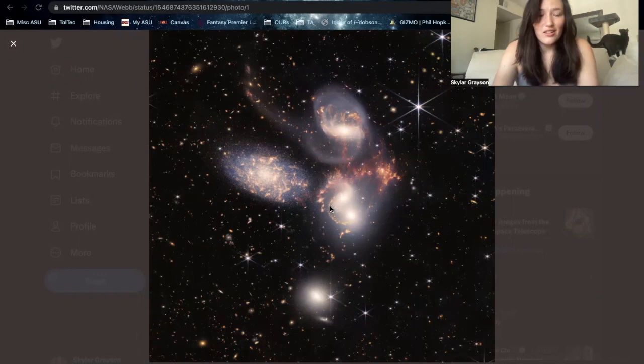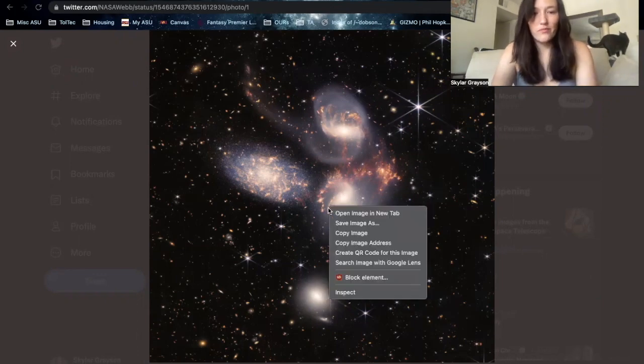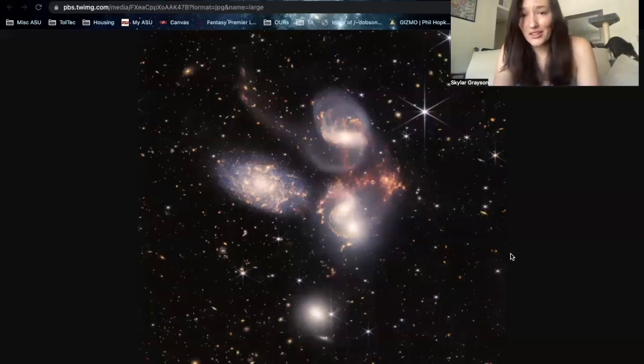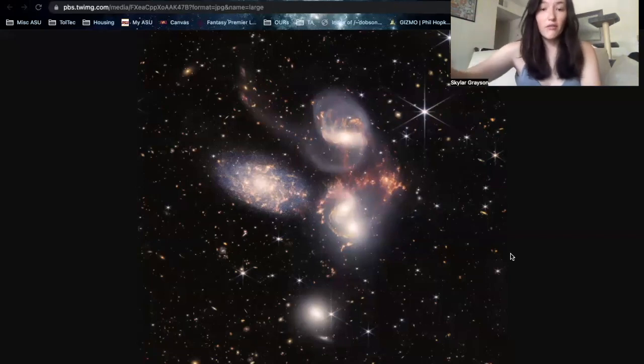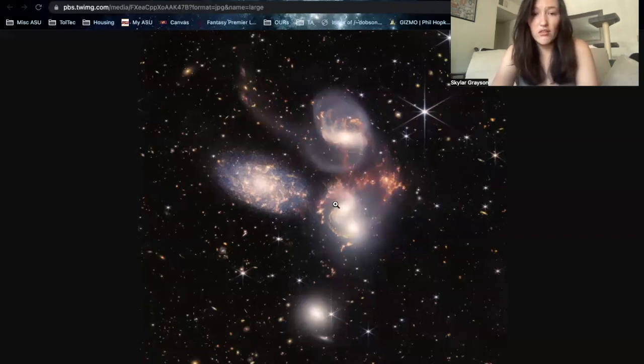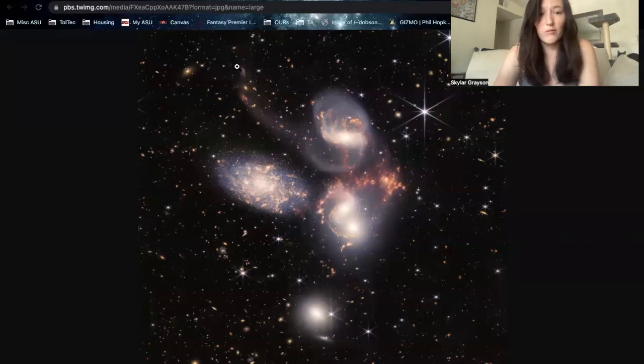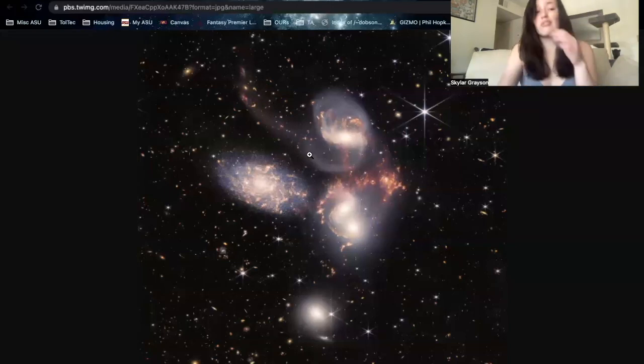Okay. Let's look at this. So what we're looking at here is Stefan's Quintet, which is a group of five galaxies. And four of them are actually in the process of merging. You can see these two galaxies right here have essentially really begun that merging process. And they're all dancing around each other. And you get these really interesting tales of gas and stars that form because of all the gravitational interactions. And so I need to hydrate. Wow.